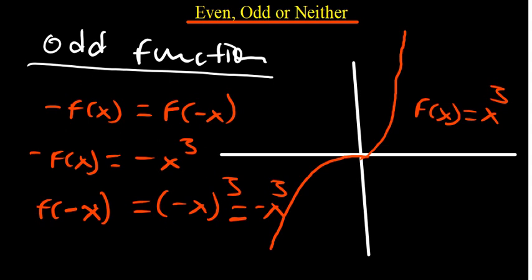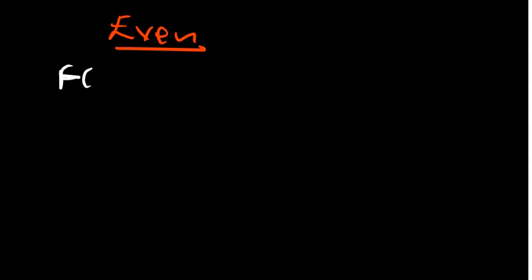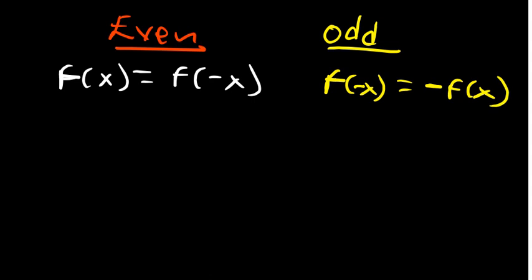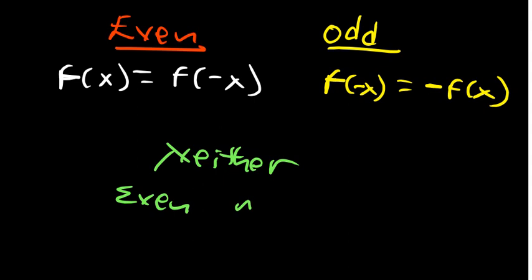To summarize the conditions: for an even function, f(x) = f(-x). For an odd function, f(-x) = -f(x). Some functions satisfy neither condition, making them neither even nor odd. Now let's solve the given questions.